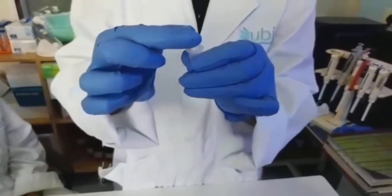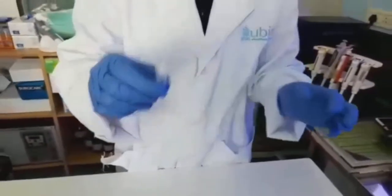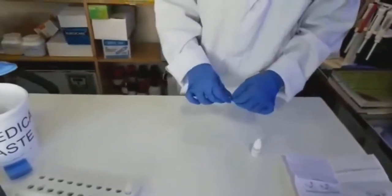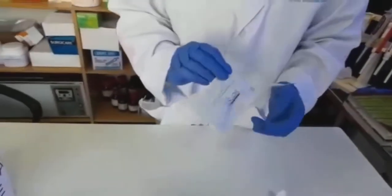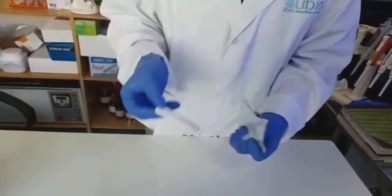Fix the nozzle on the extraction tube. Take out the test card from the foil pouch and place it on a horizontal surface.